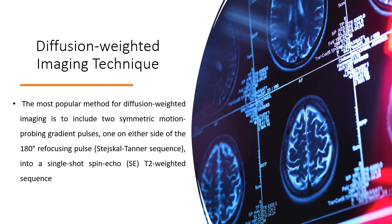After that and finally, we will see here the diffusion-weighted imaging technique, which includes two symmetric motion probing gradient pulses, one on either side of the 180-degree refocusing pulse, into a single shot spin-echo T2-weighted sequence.